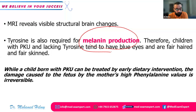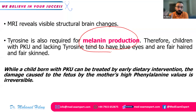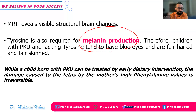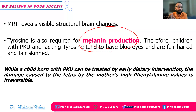A child born with phenylketonuria can be treated by early dietary intervention. However, if damage is caused to the fetus in intrauterine life, this is most probably irreversible. Changes occurring later in life may be reversible with a phenylalanine-restricted diet. If changes happen already to the fetus, they are mostly irreversible — which is why precautions must be fulfilled before a woman with the disease gets pregnant.